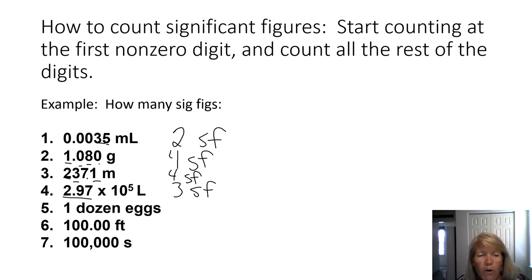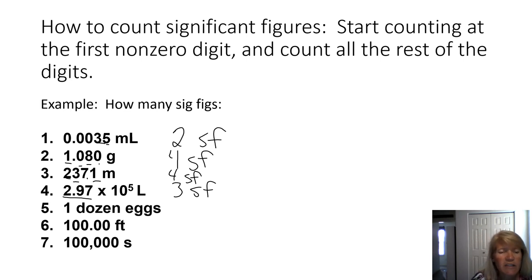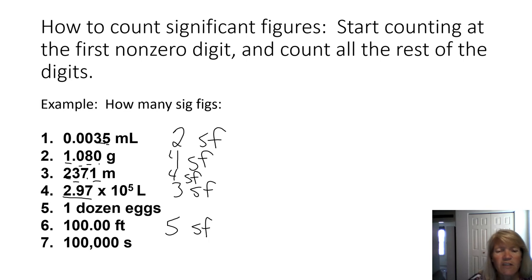Number five is one dozen. One dozen is a whole number, so it has unlimited or infinite significant figures because it's a whole number. Number six starts with a digit other than zero and has a decimal, so we can count them all — that's five significant figures.